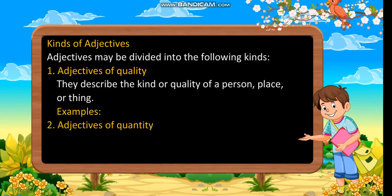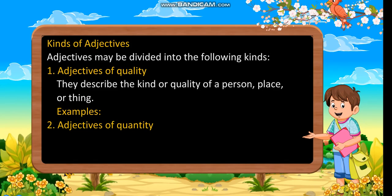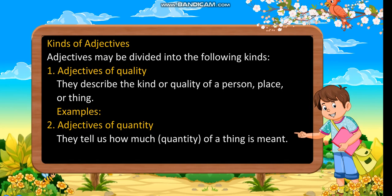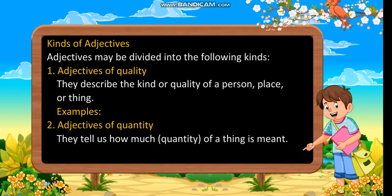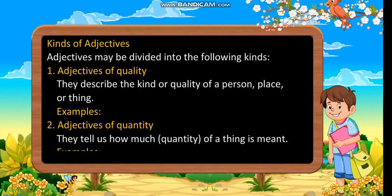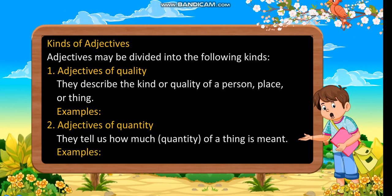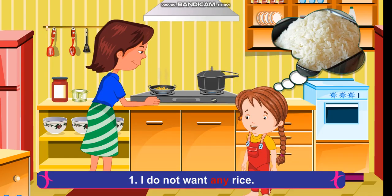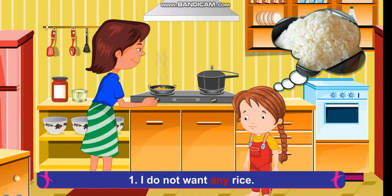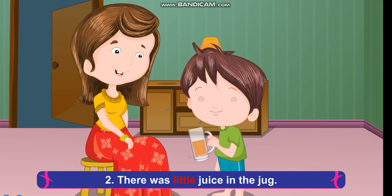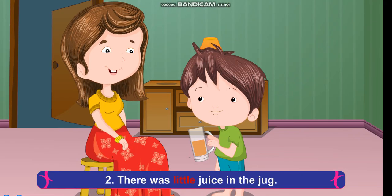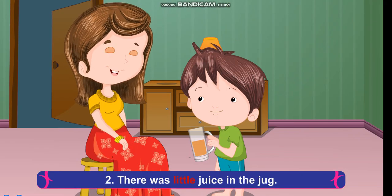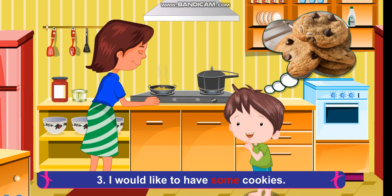Adjectives of quantity: they tell us how much quantity of a thing is meant. Examples: I do not want any rice. There was little juice in the jug. I would like to have some cookies.